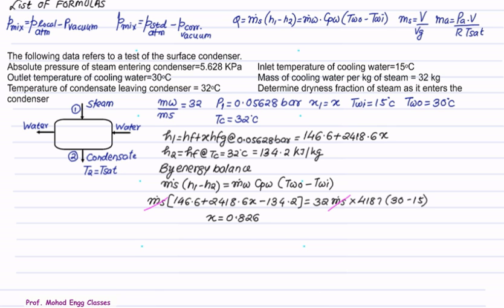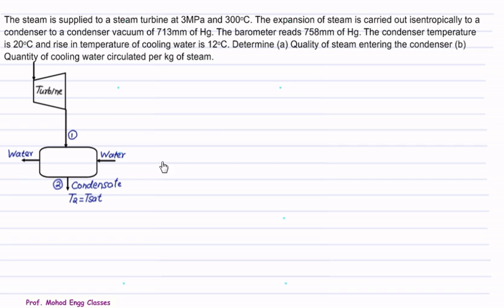In example 3, steam is supplied to a steam turbine at 3 MPa and 300°C. Expansion of steam is carried out isentropically, so S1 = S2. The vacuum in the condenser is 713 mm of Hg, and the barometer reads atmospheric pressure of 758 mm of Hg. The condenser temperature is 20°C and the rise in cooling water temperature between inlet and outlet is 12°C.